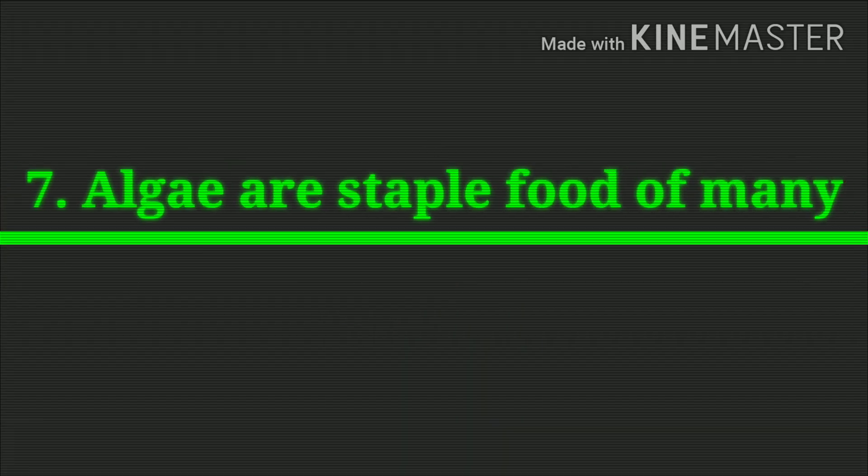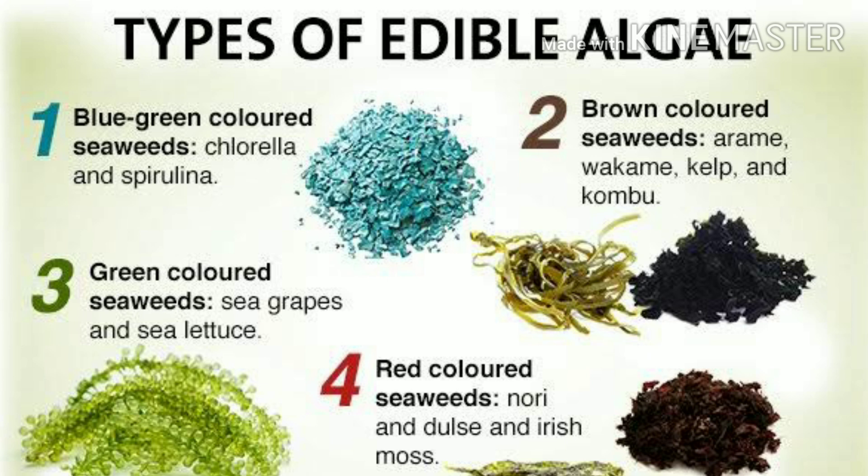Algae are used as food in many parts of the world. Algae such as seaweeds — including Chlorella, Spirulina, and Kelp — are used as a staple food.